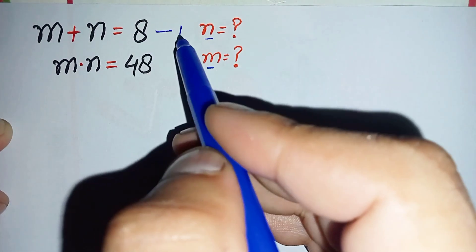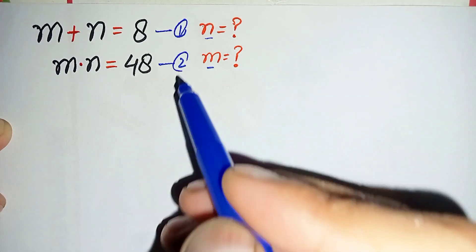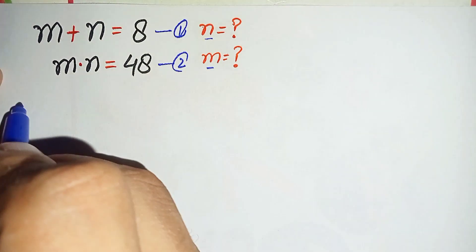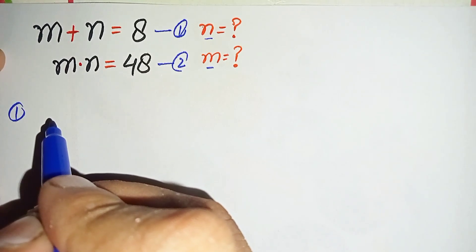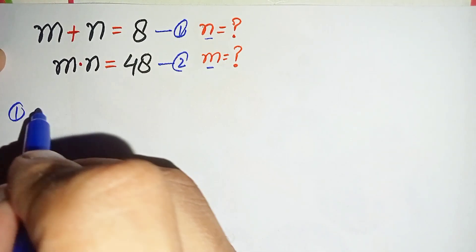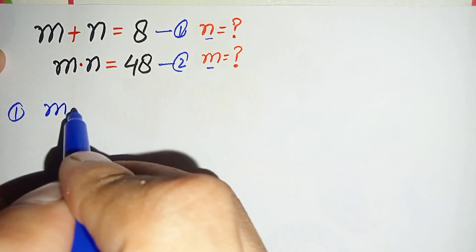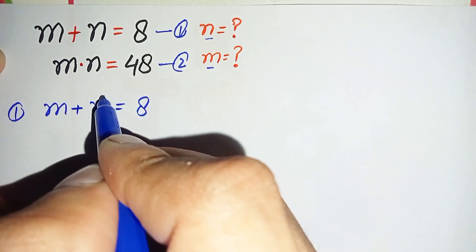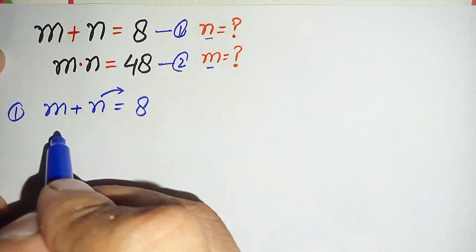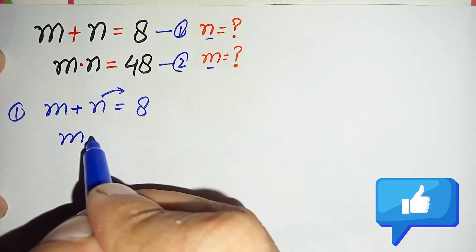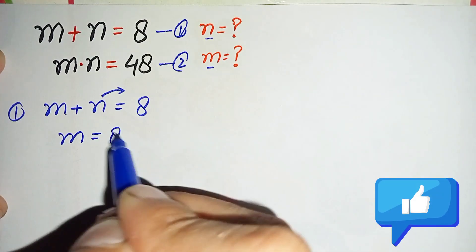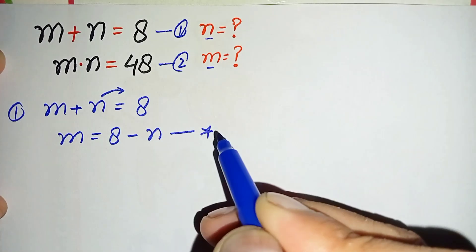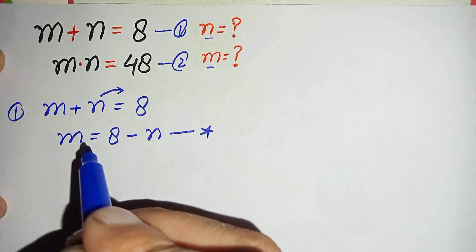We label these as equation number one and equation number two. Taking equation number one, we will make m the subject. Equation one is m plus n equals 8, so moving n to the right hand side gives m is equal to 8 minus n. We call this equation star.